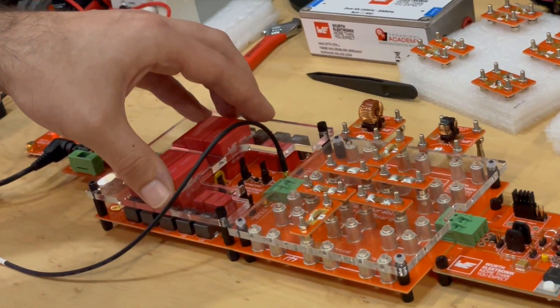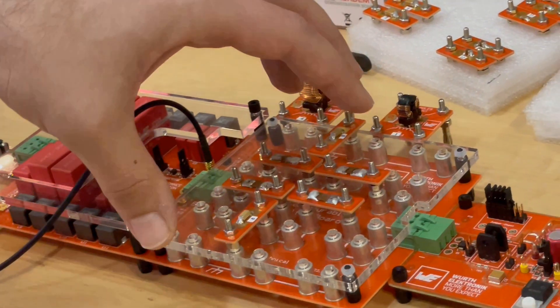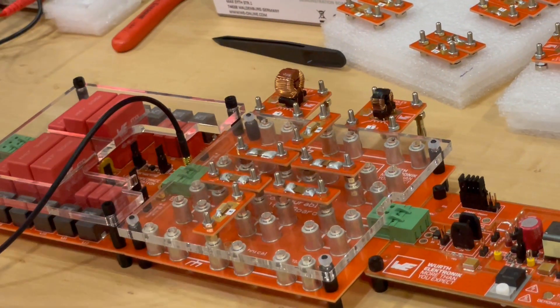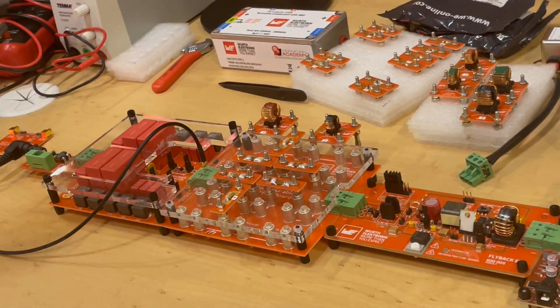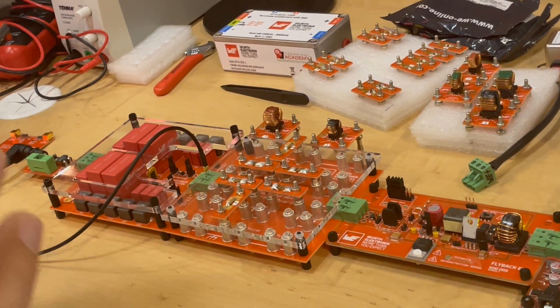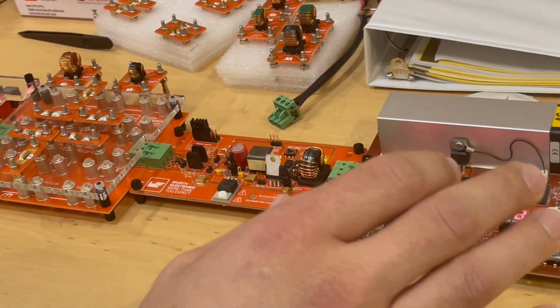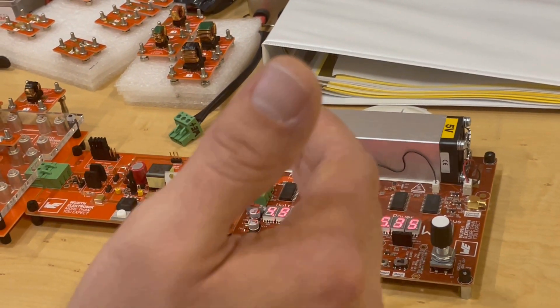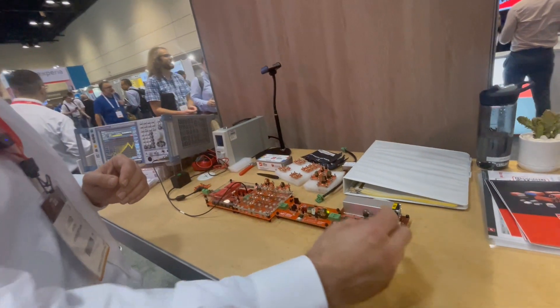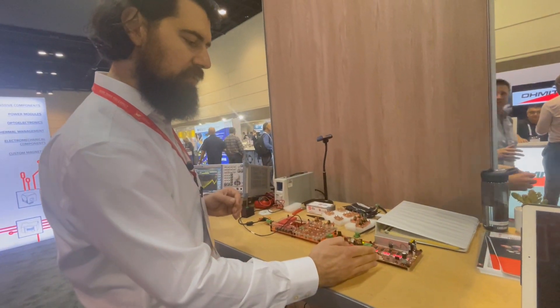We have a LISN, a line impedance stabilization network, a configurable filter board, so then we can choose different common mode chokes, different X caps, Y caps for different purposes. Of course the flyback board, and then we have an electronic load, so we can change the amount of power that's being drawn on the flyback converter with just turning a knob.